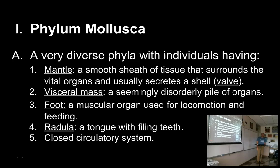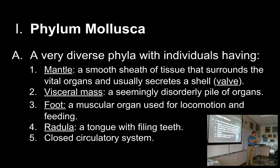All mollusks have this muscular organ called a foot. For snails, they crawl on it. For squid, the foot has been cut into eight pieces and goes around their mouth. For a clam, the foot is inside and can come out to move through the sand. So it's in a different place in all the different mollusks, but they all have this muscular organ used for locomotion and feeding.